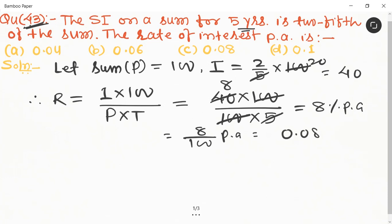So it equals 8/100 per annum, which equals 0.08 per annum, which is the required answer.